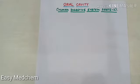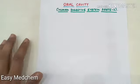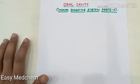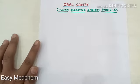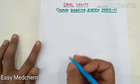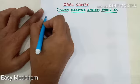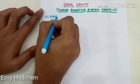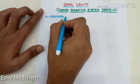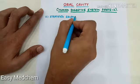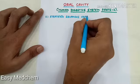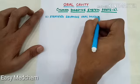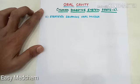The oral cavity, or mouth, is responsible for the intake of food and it is lined by the stratified squamous oral mucosa. Areas subject to significant abrasion, such as the tongue, hard palate, and roof of the mouth, have a keratinized covering.